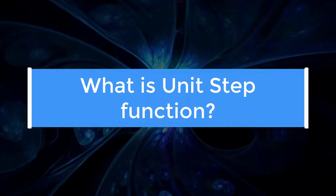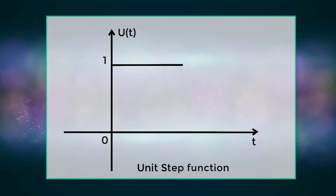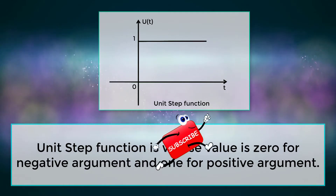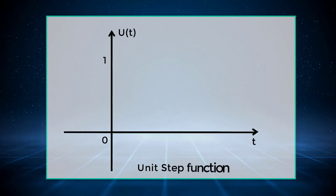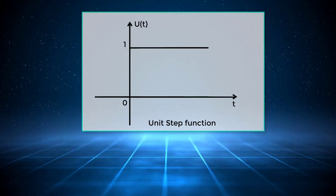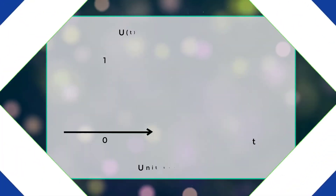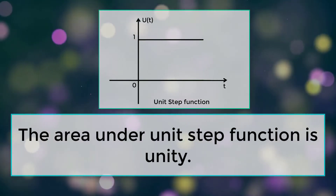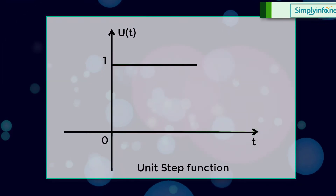What is Unit Step Function? The Unit Step Function is one whose value is zero for a negative argument and one for a positive argument. It is denoted by UT. It is used as the best test signal, and the area under the Unit Step Function is unity.